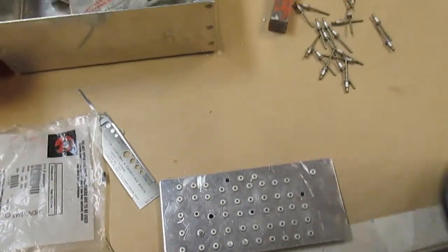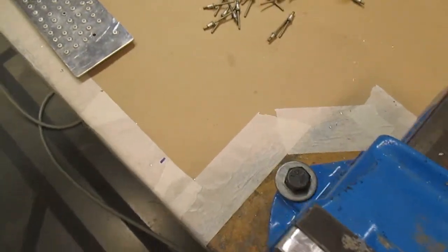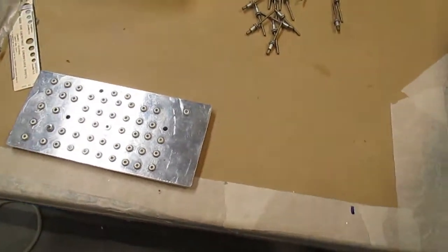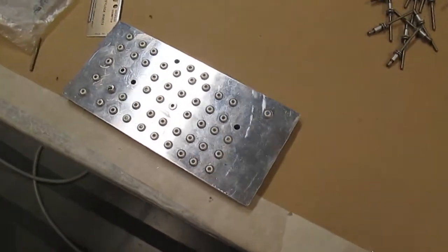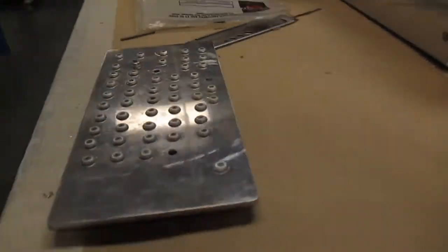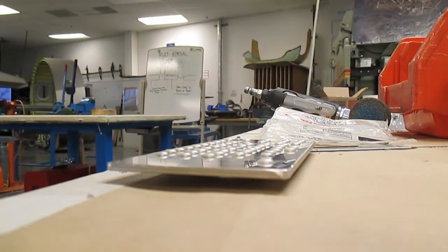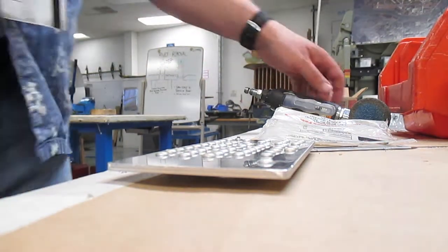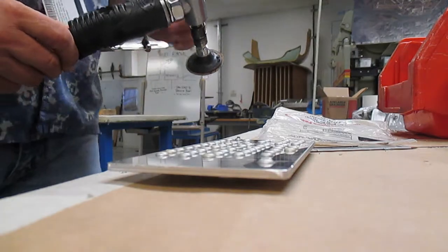Now we've got the wrong rivet in there, so what do I do? I've got to take it out. Of course, I went easy on myself and gave myself a universal. I'm going to give you a quick demo. What I'm using is a high-speed die grinder.